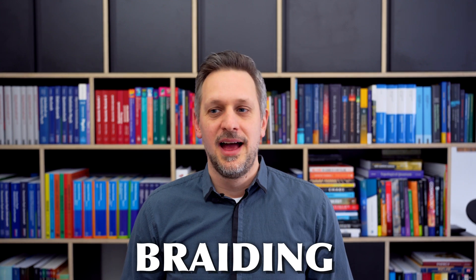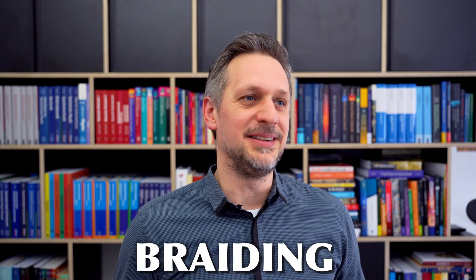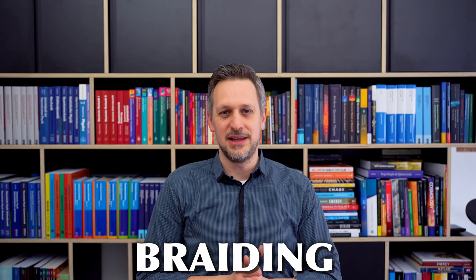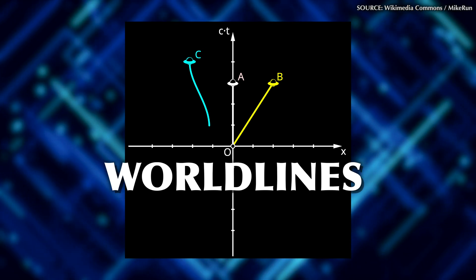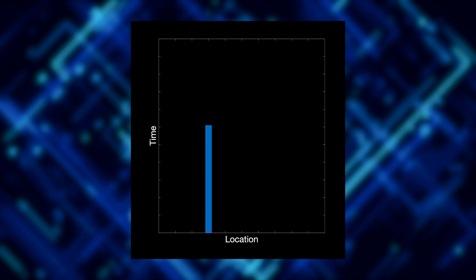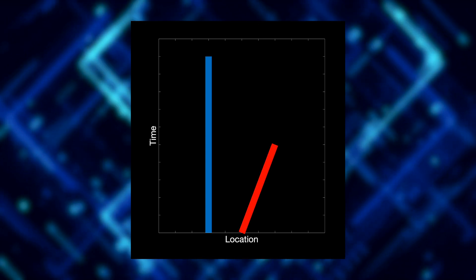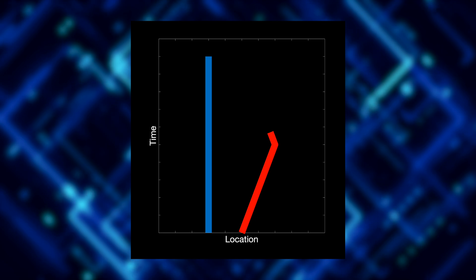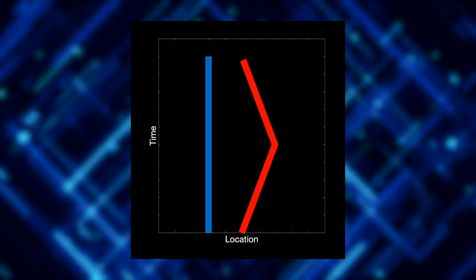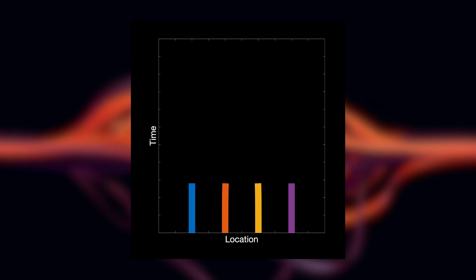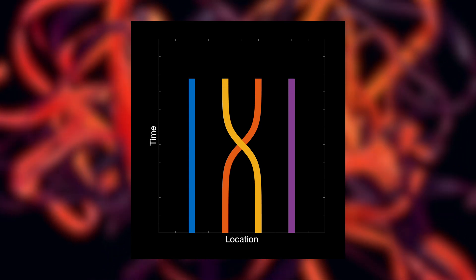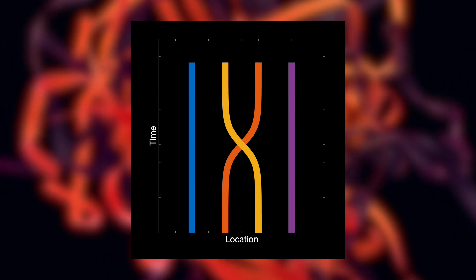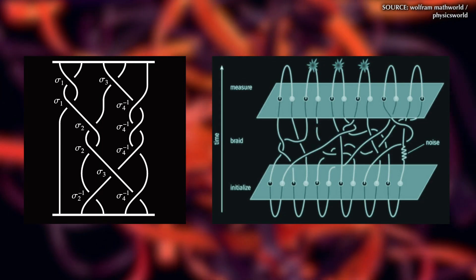The second connection to topology is braiding. How do you braid a quasi-particle? You can braid their worldlines. A worldline just means tracking your position in space over time — if you stand still, your worldline looks like a straight vertical line; if you move somewhere, it curves; if you move back, it returns. These are the worldlines of four quasi-particles, and if you exchange the positions of two, you get braids! You can create braids by just exchanging two quasi-particles, and this can become arbitrarily complicated.